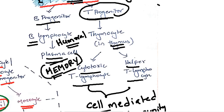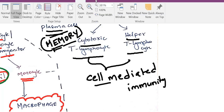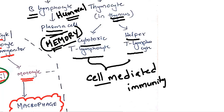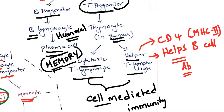Coming to cytotoxic and helper T lymphocytes: helper T lymphocytes help B cells to produce antibodies. Helper T cells have CD4 on their cell wall and they bind to major histocompatibility complex 2 (MHC2).